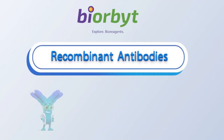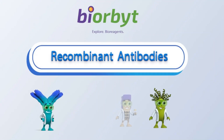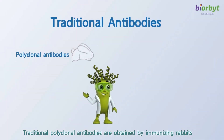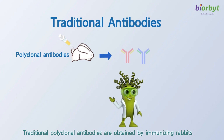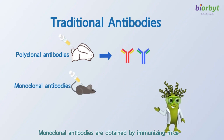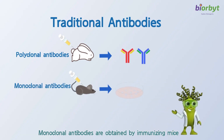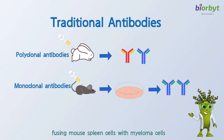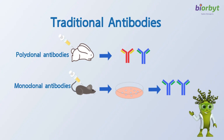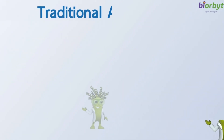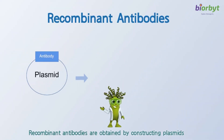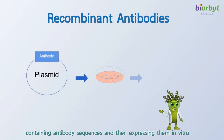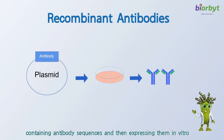Recombinant antibodies. Traditional polyclonal antibodies are obtained by immunizing rabbits. Monoclonal antibodies are obtained by immunizing mice, fusing mouse spleen cells with myeloma cells, and cell culture screening. Recombinant antibodies are obtained by constructing plasmids containing antibody sequences and then expressing them in vitro.